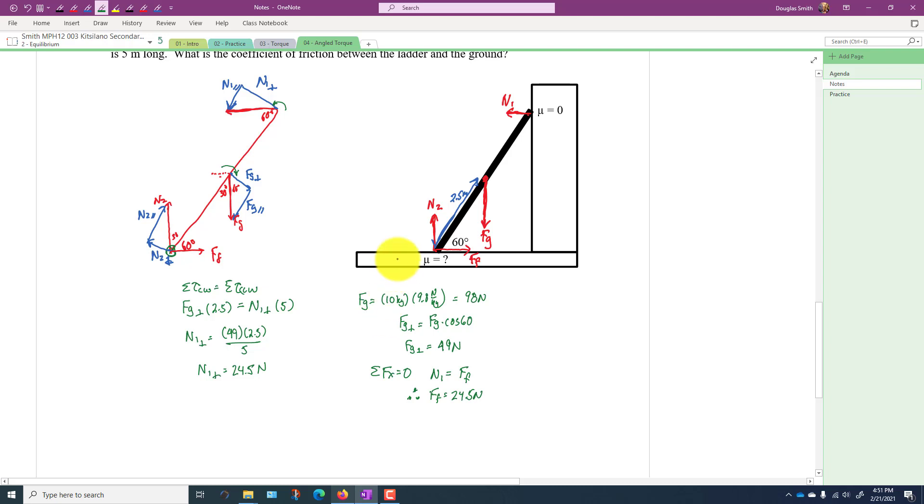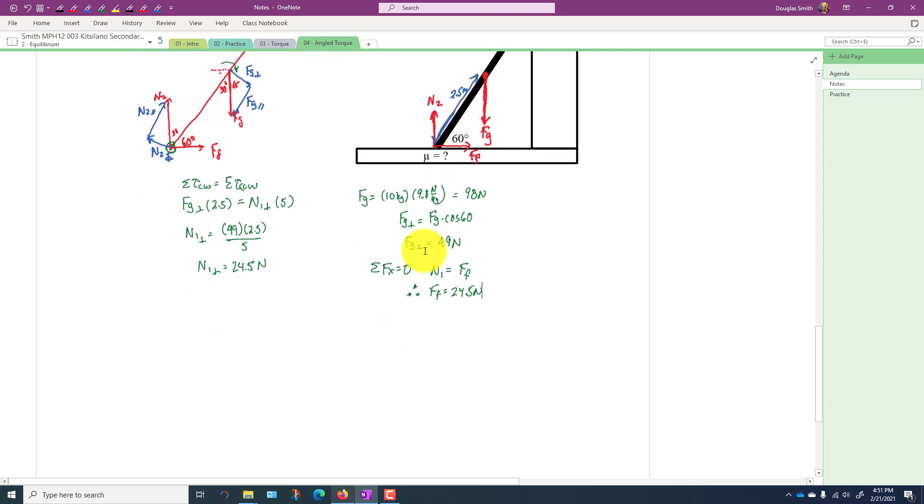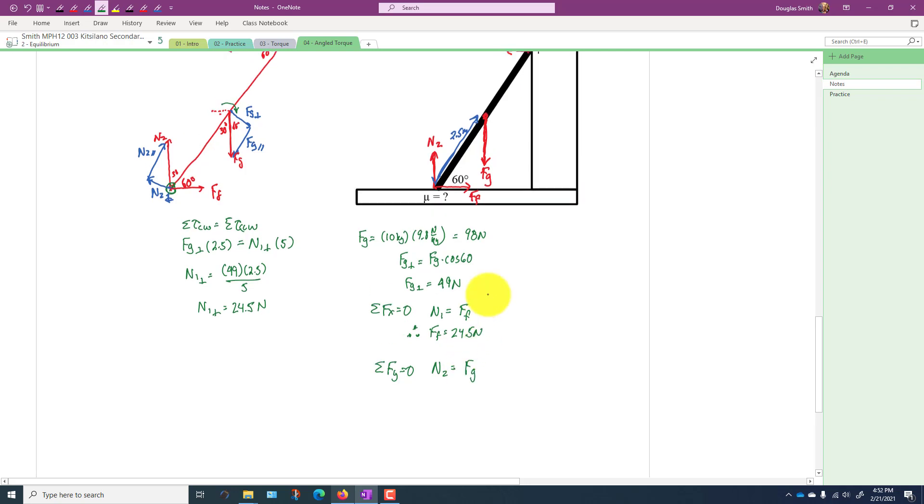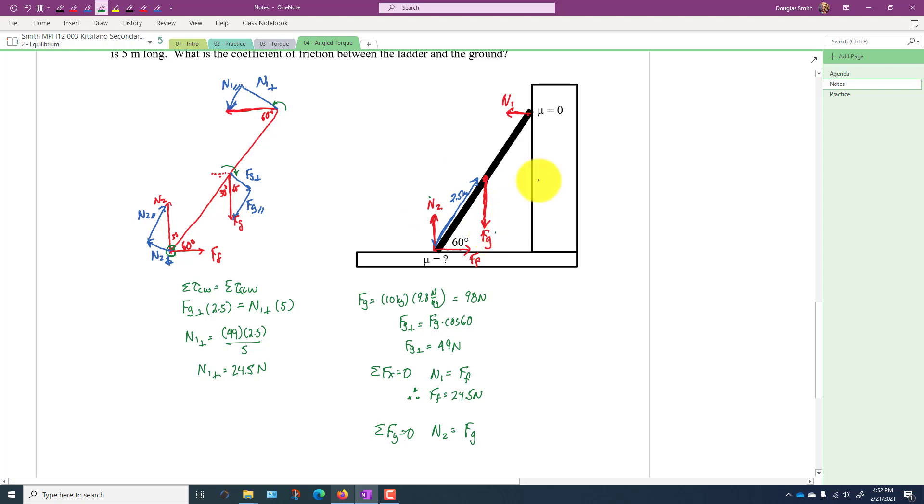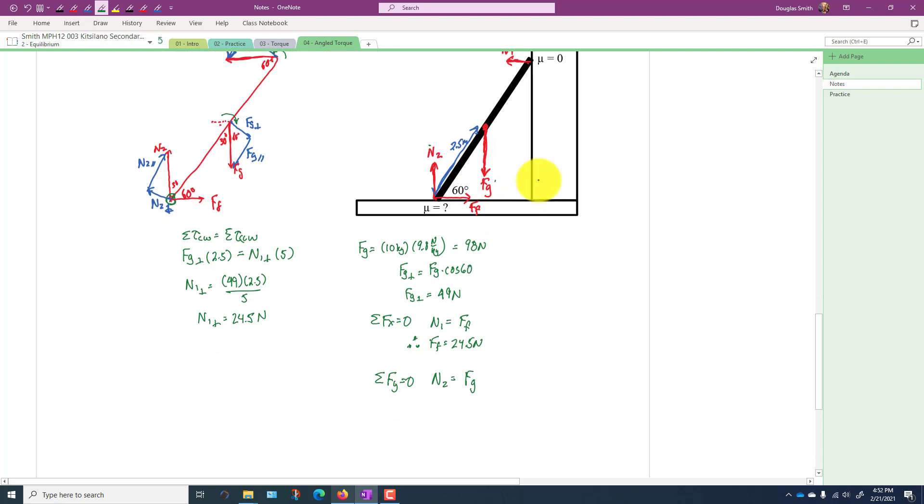So last thing we have to do is figure out N2, and N2 we can figure out as well quite easily because the sum of all the forces in the y-direction are equal to zero. Therefore N2 is equal to Fg. These are the only two vertical forces, so N2 is equal to what we said it was, 98 newtons.